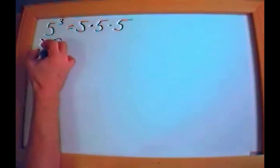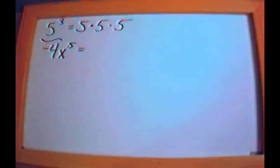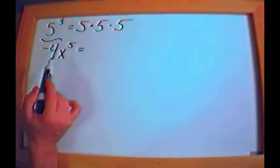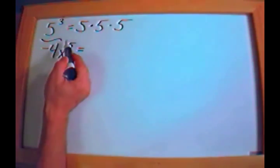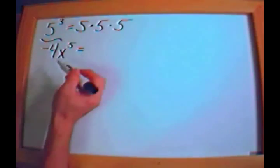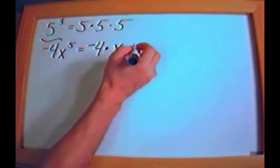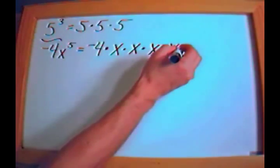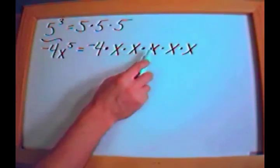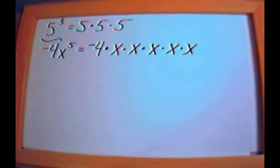Let's take a look at something like negative 4x to the fifth. How would we write this without using any exponents? There are no parentheses anywhere, so the thing raised to the fifth power is just the x. The negative 4 is completely unrelated because there are no parentheses. So this equals negative 4 times x times x times x times x times x — we multiply five x's — and the negative 4 is just multiplied by this whole thing.